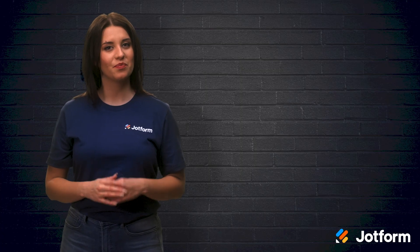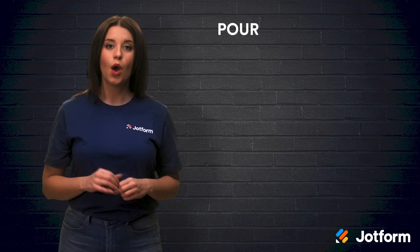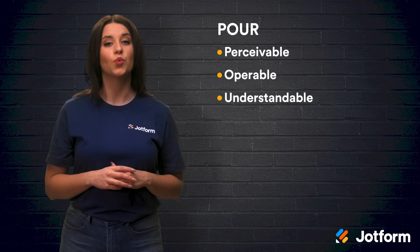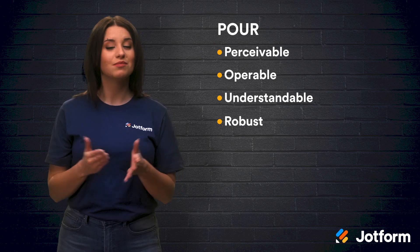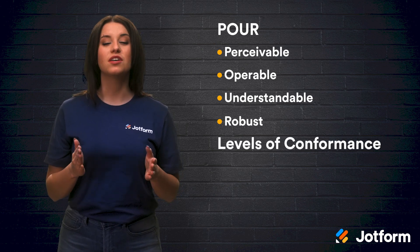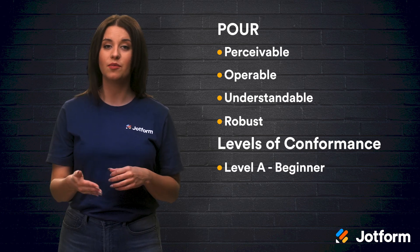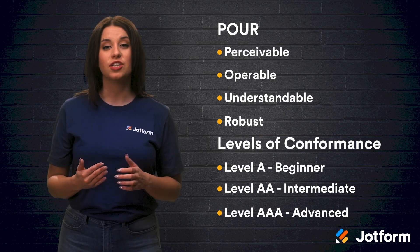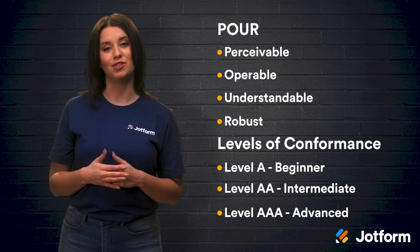Okay, let's recap. Web accessibility standards are made up of the POUR principles and the three levels of conformance. POUR stands for Perceivable, Operable, Understandable, and Robust. If you follow these guidelines, your website will be accessible to everyone. The levels of conformance determine how accessible your website is, from Level A, Level AA, and Level AAA. Each level has their own set of criteria, and as you achieve more and more criteria, you move up through the levels.